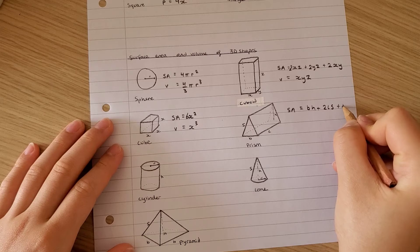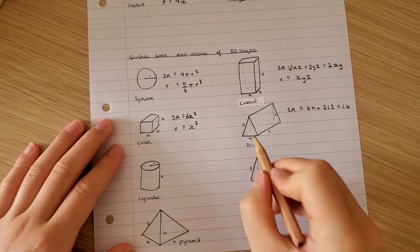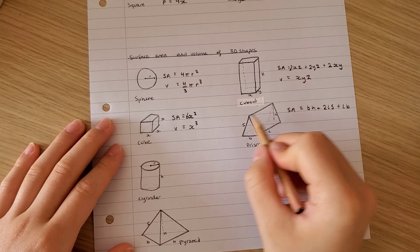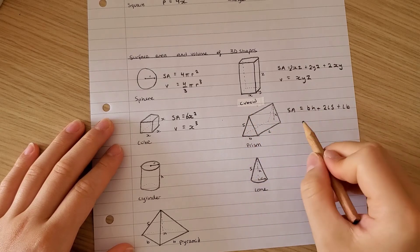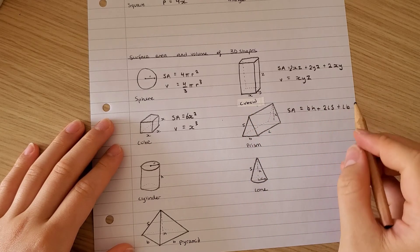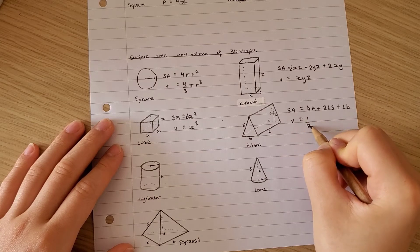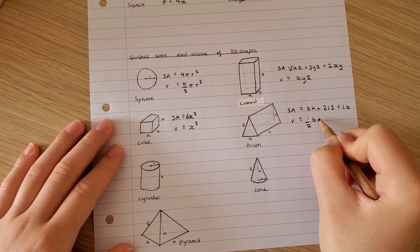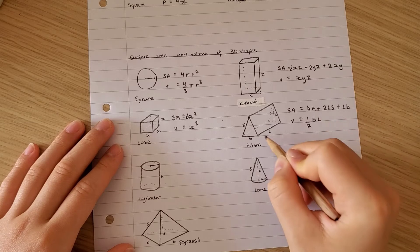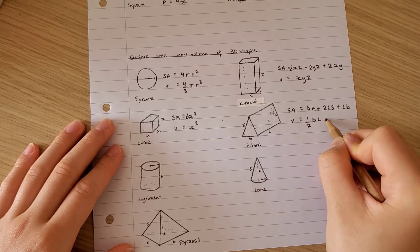Plus you label the sides so you can understand which numbers you need to add and multiply. For volume, it is half times this, times length, times height.